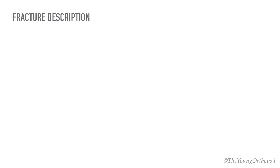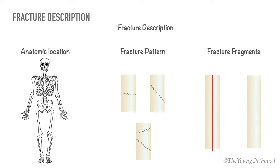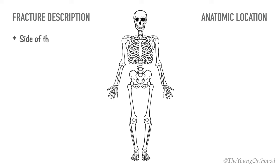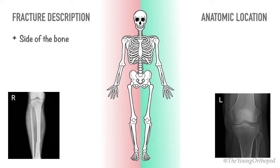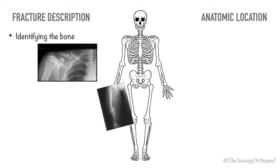The fracture description on a trauma radiograph must include the anatomic location of the fracture, the fracture pattern, and the relationship of fracture fragments. While describing the precise anatomic location, the first step is to find out if it is a left or right sided bone. This can be done by reading the marker on the radiograph and confirmed by clinical examination of the patient. The next step is to identify the involved bone.